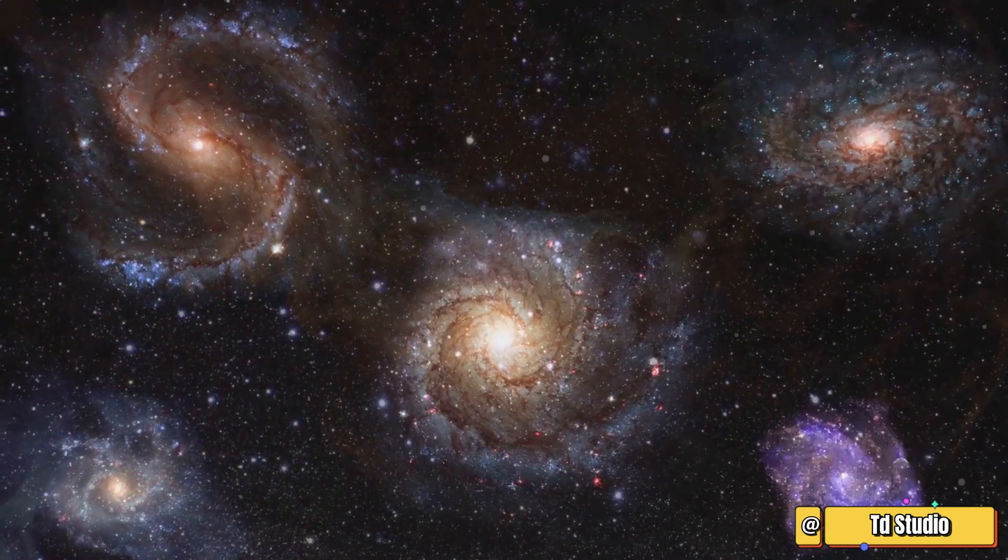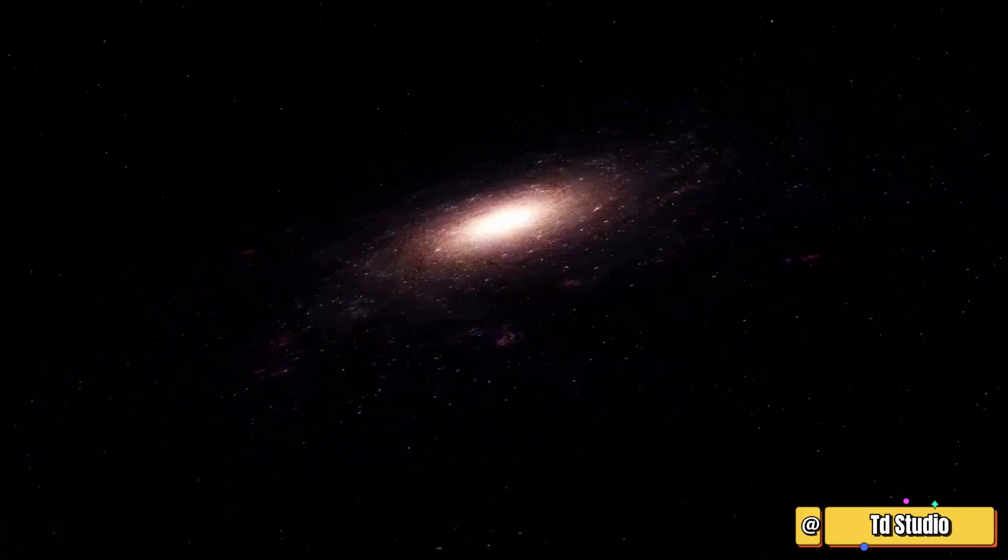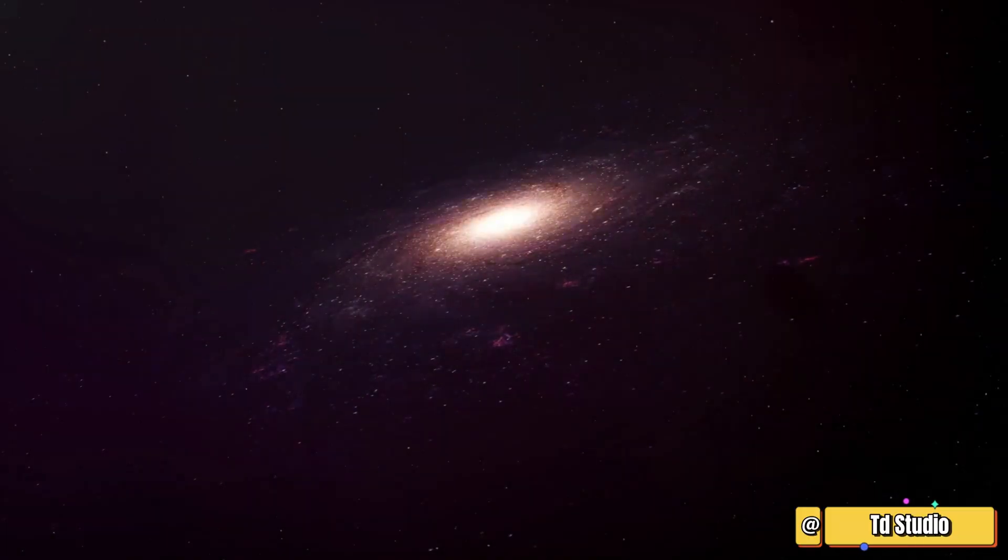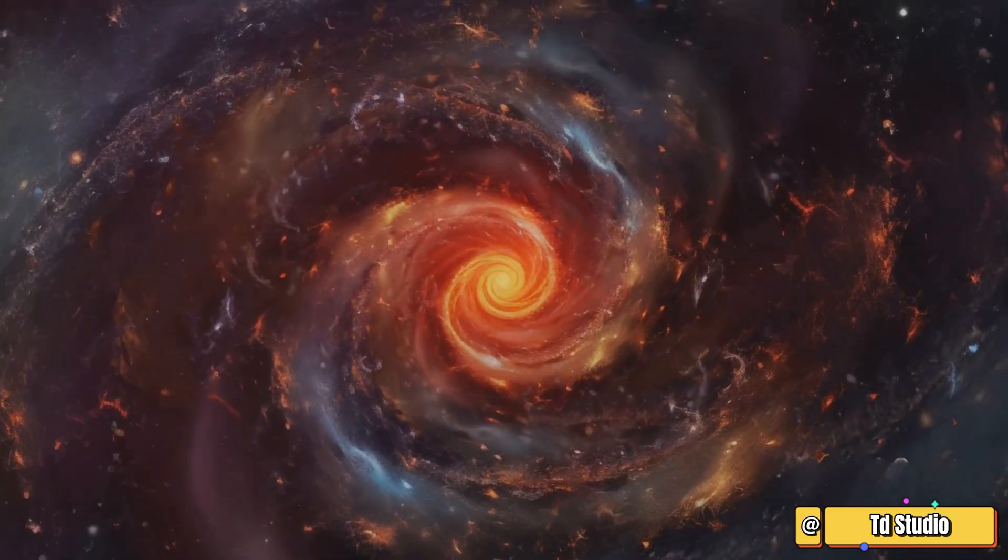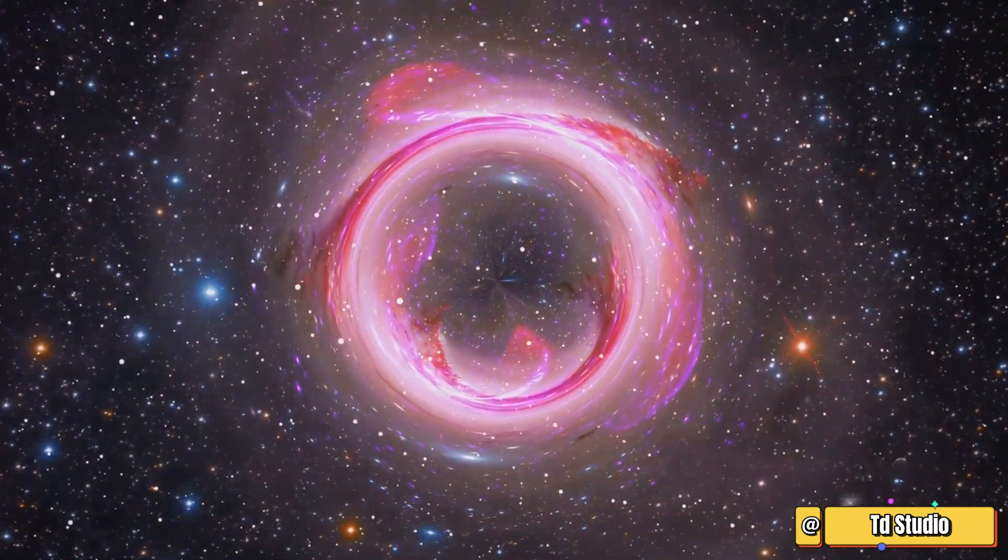When galaxies collide, they don't crash like cars. Instead, they pass through each other. Their gravity pulls on each other, distorting their shapes. Stars get scattered and thrown into new orbits. It's like a cosmic dance, not a head-on collision.